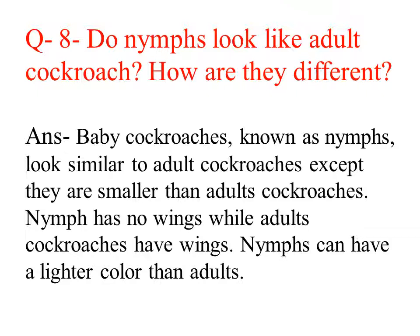Question number 8: Do nymphs look like adult cockroaches? How are they different from each other? Answer: Baby cockroaches known as nymphs look similar to adult cockroaches except they are smaller. Nymphs have no wings while adult cockroaches have wings. Nymphs can also have a lighter color than the adult ones.